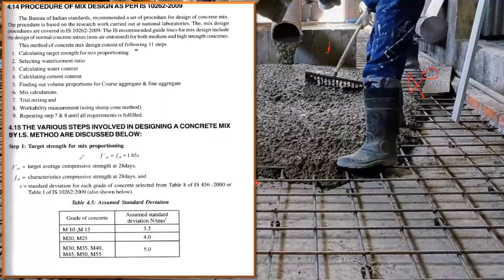Step one: Target strength of mix proportion. The formula is f'ck = fck + 1.65 × s, where fck is the characteristic compressive strength at 28 days and f'ck is the target average compressive strength. For M25 grade concrete, substitute fck = 25: f'ck = 25 + 1.65 × s. For M25, the standard deviation s is 4.